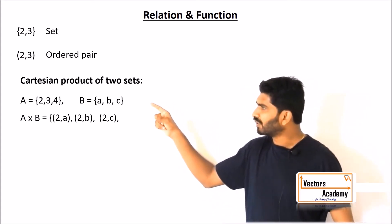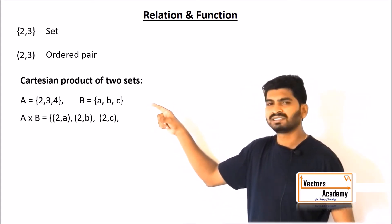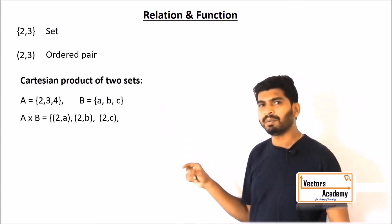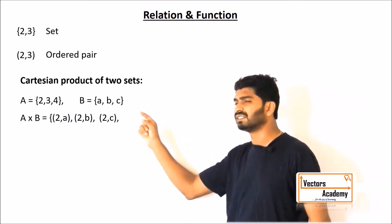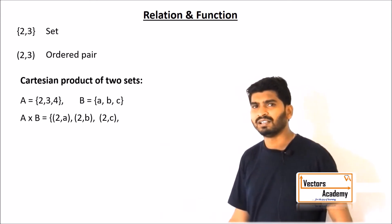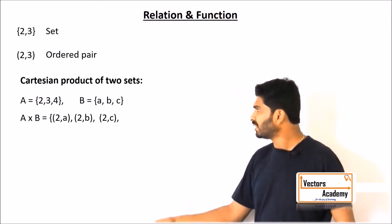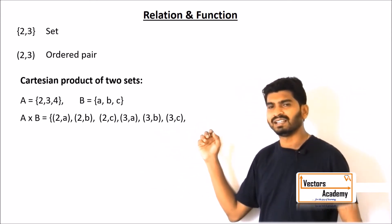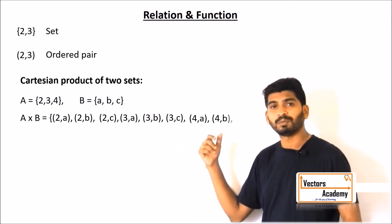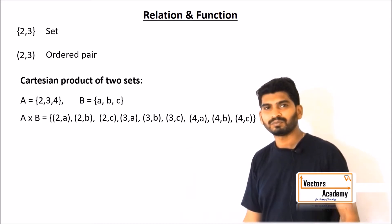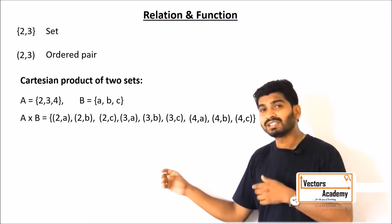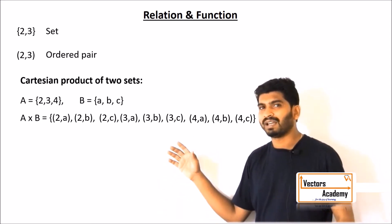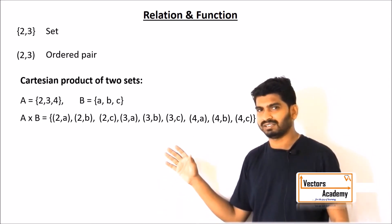The same thing is repeated with the second and third elements of set A. So the next three terms will be (3,a), (3,b), (3,c), and the next will be (4,a), (4,b), (4,c). This is how you multiply two sets, i.e., find their Cartesian product.